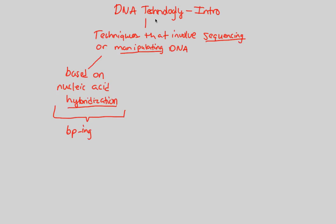We're going to see how DNA technology involves base pairing in later videos of this lecture. Most importantly, in order to manipulate and sequence DNA, we have to use base pairing techniques. These base pairing techniques are going to eventually allow something as futuristic and unbelievable as genetic engineering — this technology allows genetic engineering.